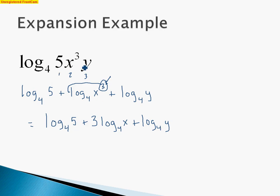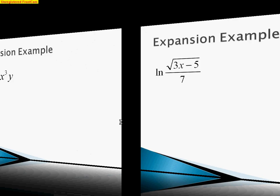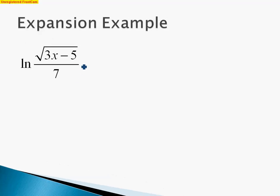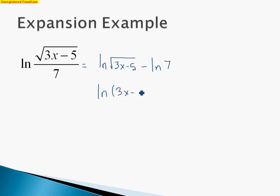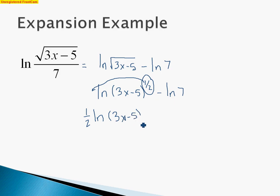Let's look at another one where we have a quotient. The quotient property means division implies subtraction, and this property still holds for natural logarithms. So we get the natural log of the square root of 3x minus 5, minus the natural log of 7. Looking for powers, the square root is the same as the 1/2 power, so the 1/2 comes down in front. Our final expansion is 1/2 times the natural log of 3x minus 5, minus the natural log of 7.